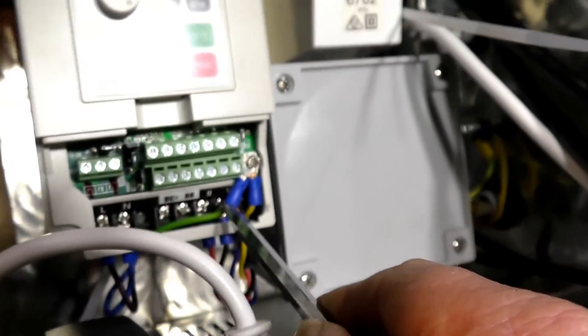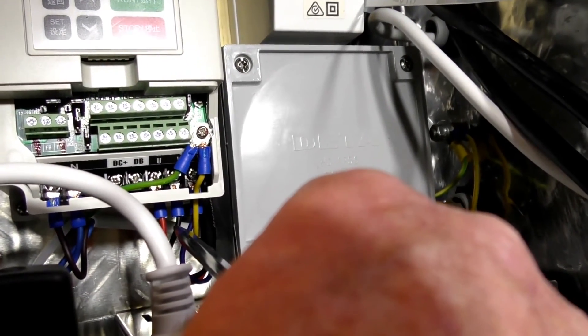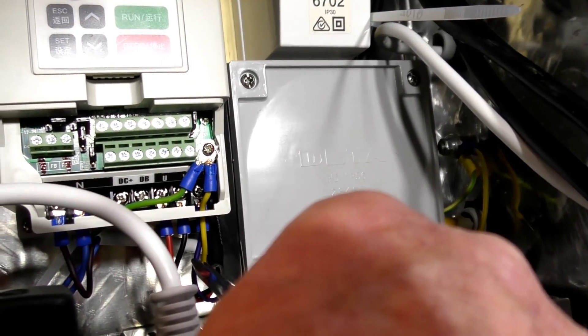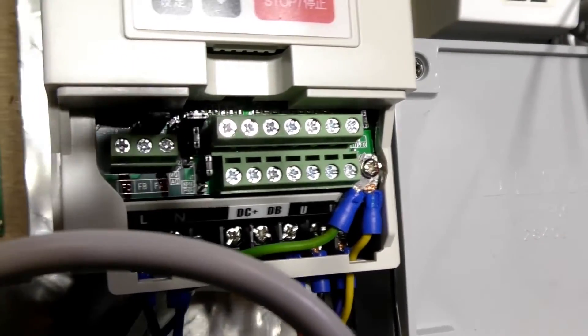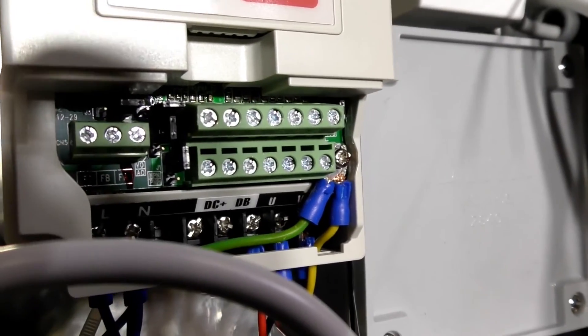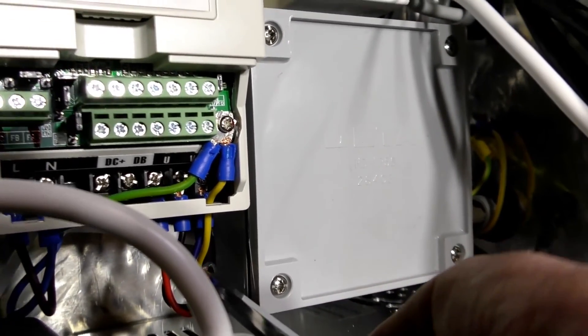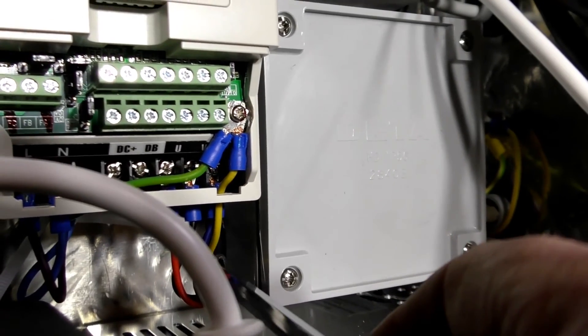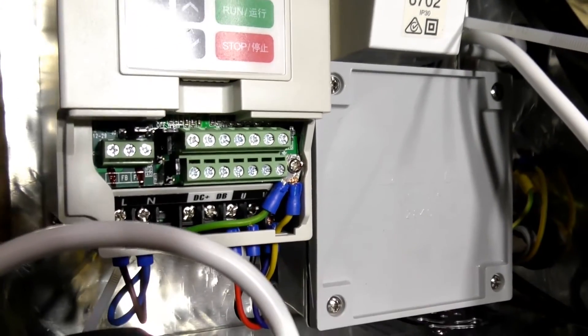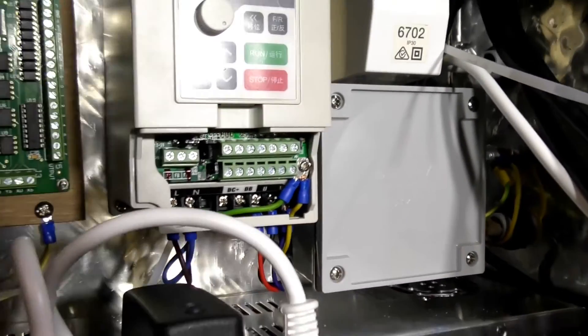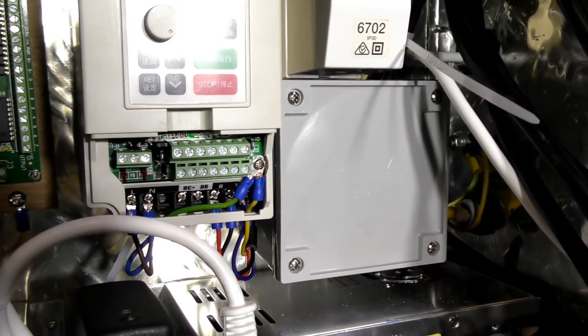That letter on there is U. U is red. The next one along is V, V is black, and W is blue. Getting a little bit closer you might be able to see through from the side there. That's U, V, W: red, black, blue. That is the way that my VFD and my spindle is connected up. That's the way the wiring says in the book and so it should be correct.